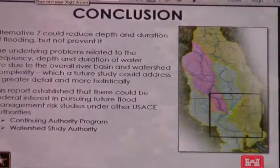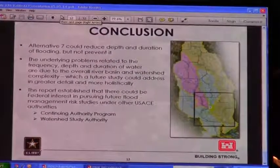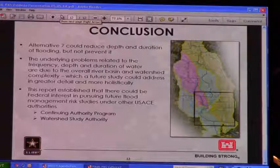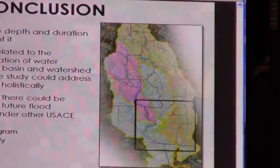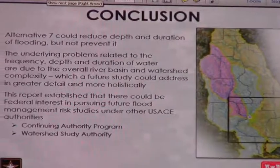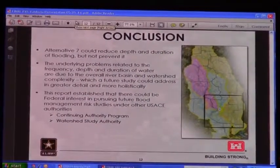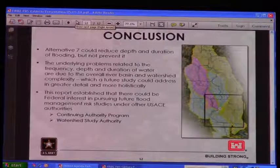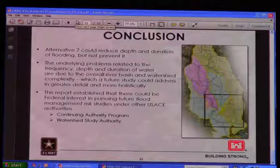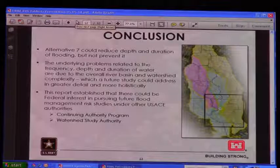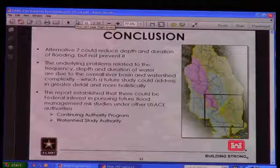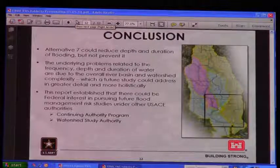In conclusion, based on the data, information, and modeling from discussions with the city, we felt that Alternative 7 gave you the best chance of reducing those flood levels in the areas being affected. This is giving you a sense of the watershed size. This is just a small part of the watershed. As we said before, this is not a total solution — we're still going to have flooding. This needs to be part of a larger solution, which requires additional studies.